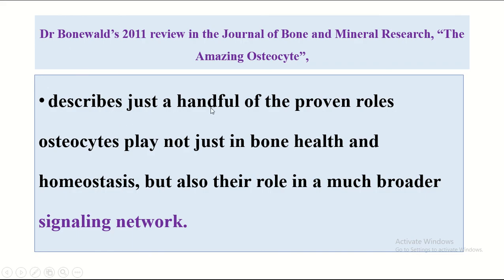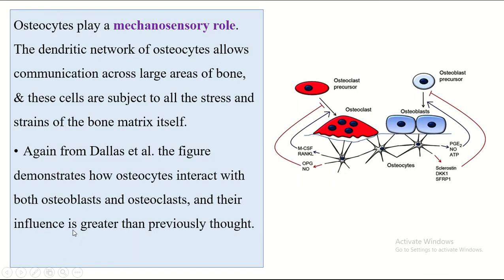Recent journal findings describe the proven roles osteocytes play — not just in bone health and homeostasis, but also in a much bigger signaling network. Osteocytes play a mechanosensory role; the dendritic network of osteocytes allows communication across large areas of bone. These cells are subject to all the stress and strain of the bone matrix itself. A figure from Dallas et al. demonstrates how osteocytes interact with both osteoblasts and osteoclasts, with influence greater than previously thought.